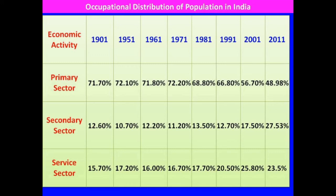The secondary sector means the manufacturing sector, also known as the industrial sector; all manufacturing industries come under this sector. The tertiary sector includes all activities which help the primary and secondary sectors, such as transportation, banking, education, health, insurance, and communication sectors.